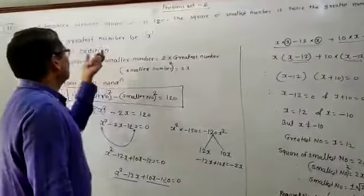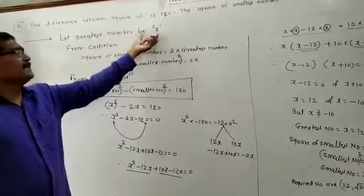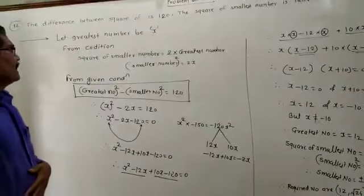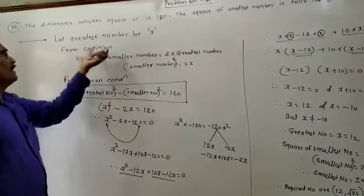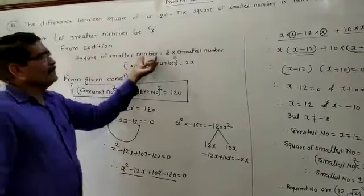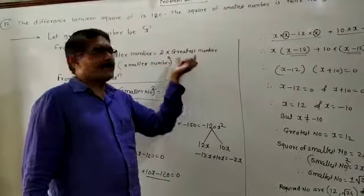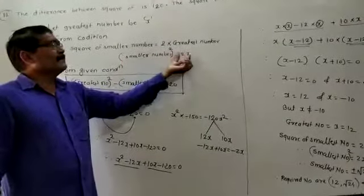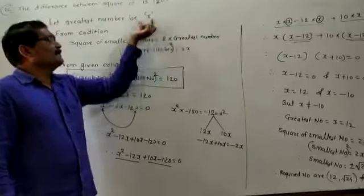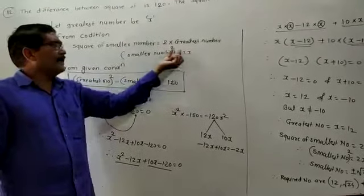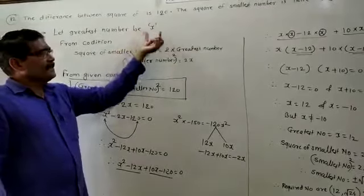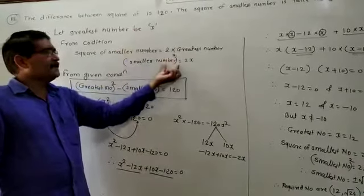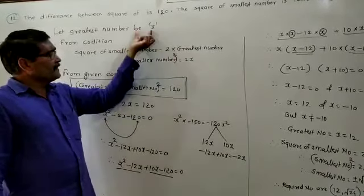I will consider the greatest number as x. For the smallest number, the condition is given: the square of the smallest number is equal to two times the greatest number. The greatest number we consider as x, so the smallest number squared is equal to 2x. This is the greatest number x, and the smallest number squared is 2x.